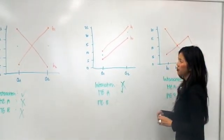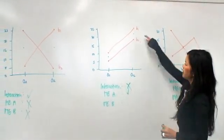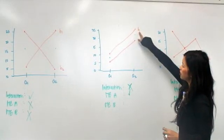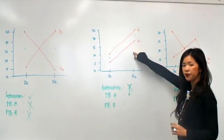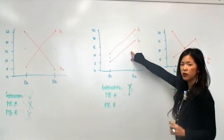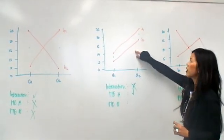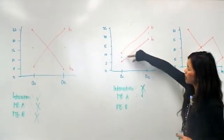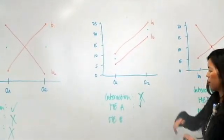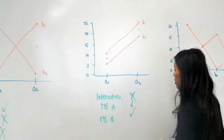Now, what about main effect B? We're just looking at the lines here, because remember, the orange line is B1 and the red line is B2. Are these lines the same? No. They're parallel, which means they're changing similarly, but B1 is always greater than B2. And on average, B1 is always about 5 data points greater than B2. So we do have a main effect B.